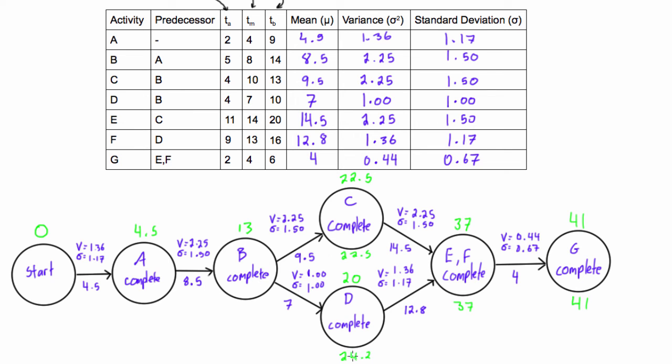And then here we have to take the smaller value, so we have 24.2 minus 7 or 22.5 minus 9.5. Well, obviously this one will win and that will give us a value of 13. And 13 minus 8.5 again, we get 4.5, and then 4.5 minus 4.5, we get 0. So just like any other network diagram, if you end up on a 0 here, you know you've done it correctly. If this isn't a 0 then you have to go back and find your error.